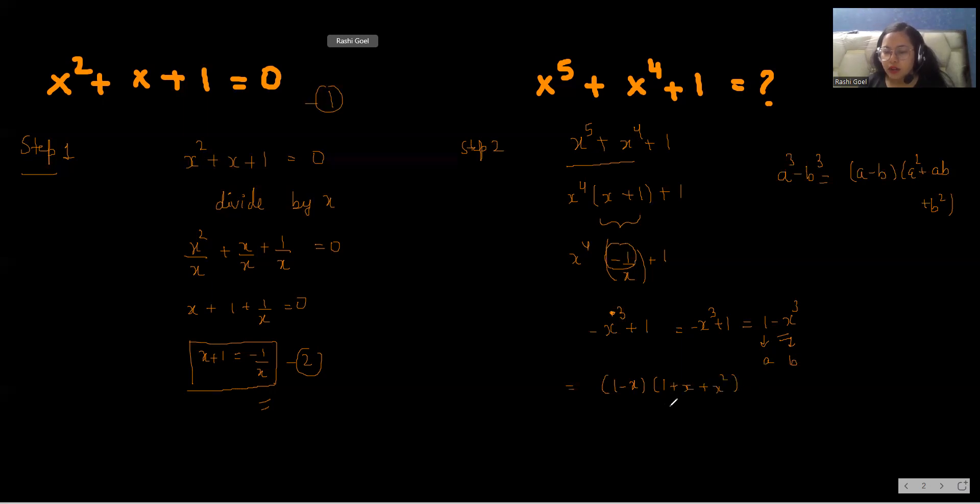So as you know that 1 plus x plus x square, in the question equation number 1 we said that x square plus x plus 1 equals 0. So we'll take this as 0.